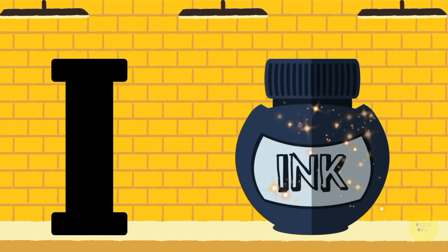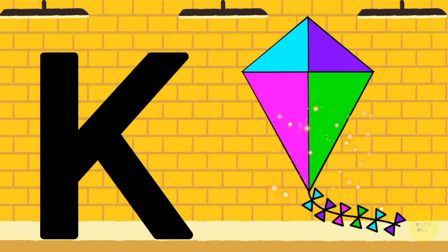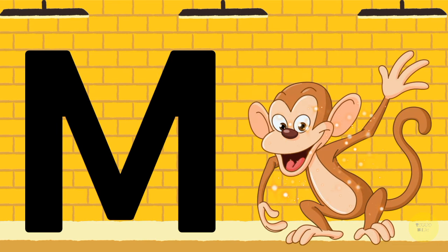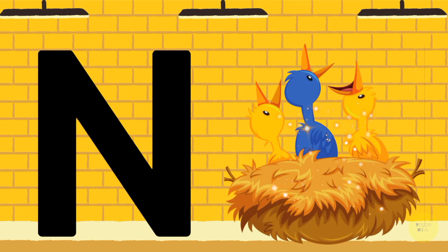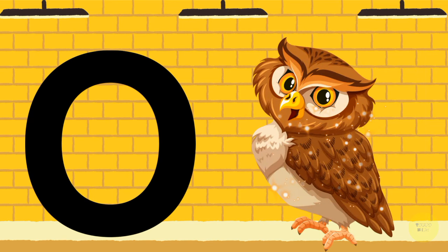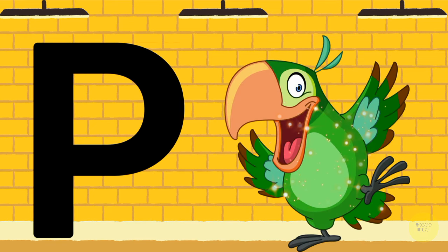I for ink pot, J for juice, K for kite, L for lion, M for monkey, N for nest, O for owl, P for parrot.